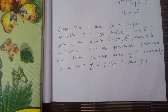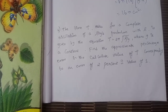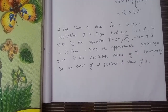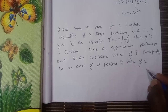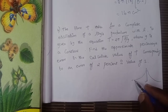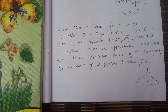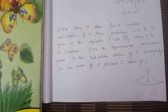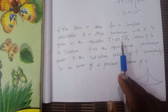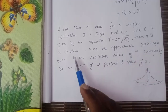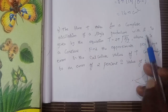It is Exercise 8.1, question number 6. The time T is taken for one complete oscillation of a simple pendulum with length L, given by the equation T = 2π√(L/G). Here, L is the length, G is the gravitational constant, and T is the time period.